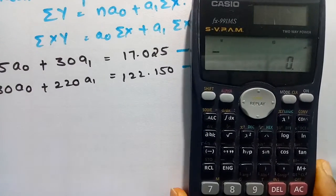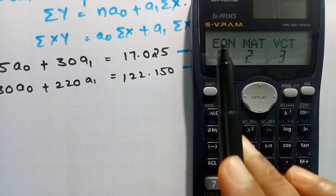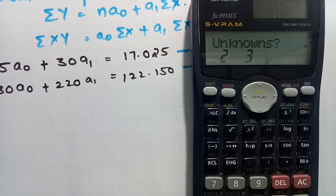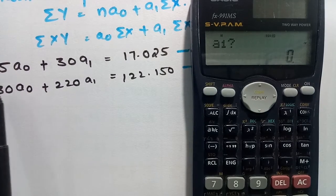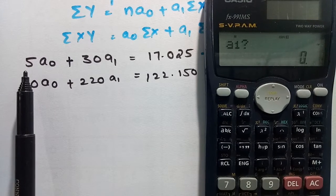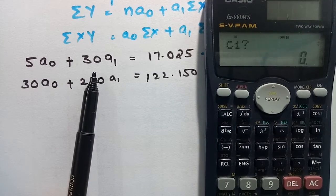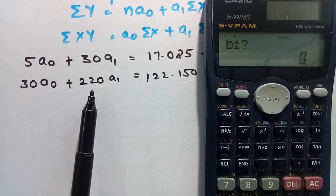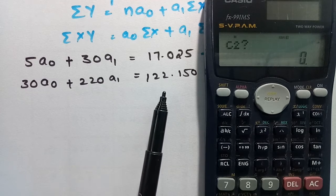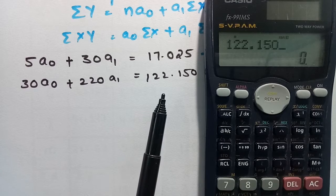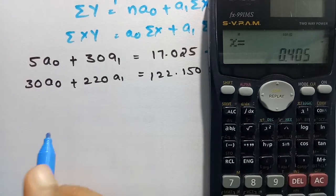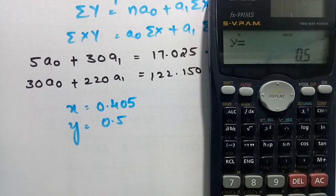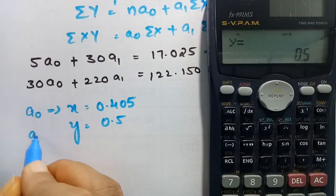Using the calculator in equation mode (MODE → 1, then 2 unknowns): entering a₁=5, b₁=30, c₁=17.025 for equation 1, and a₂=30, b₂=220, c₂=122.150 for equation 2. The solution gives x = a₀ = 0.405 and y = a₁ = 0.5.